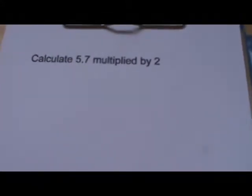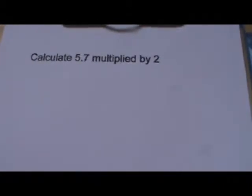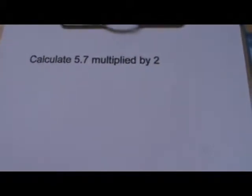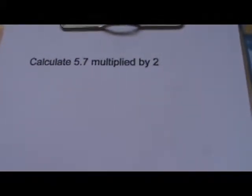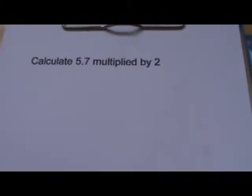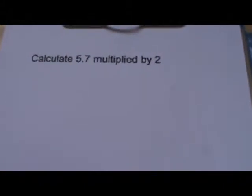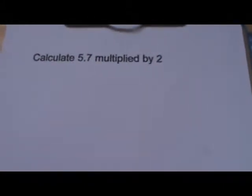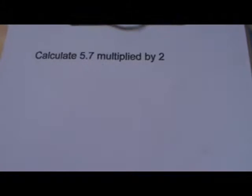The question we've got here is to calculate 5.7 multiplied by 2. So that's 2 times 5.7. It's always a good idea with decimals to estimate first. So 5.7 is roughly 6. So this sum is roughly 6 times 2, which is 12. So our answer should be a little bit less than 12.